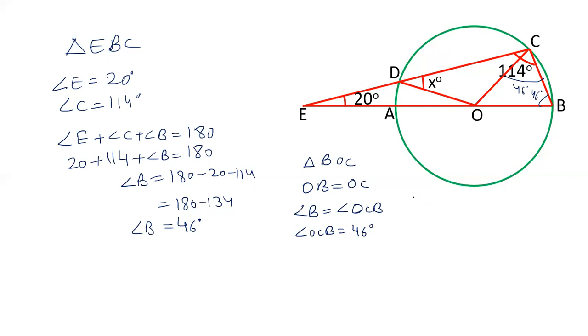Now angle BCD equals angle OCB plus angle OCD. BCD is given as 114, and OCB we just calculated as 46. So the value of angle OCD is 114 minus 46, which equals 68 degrees.